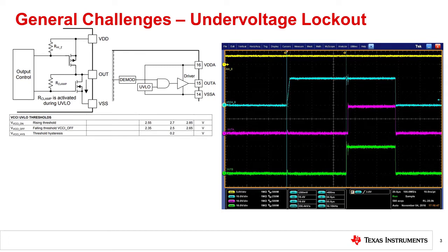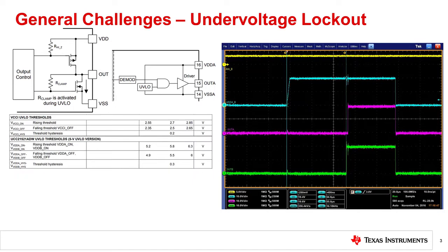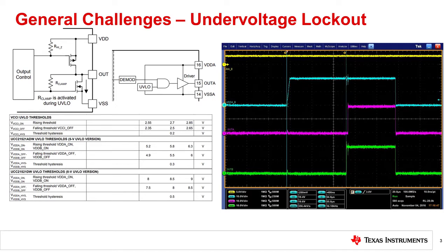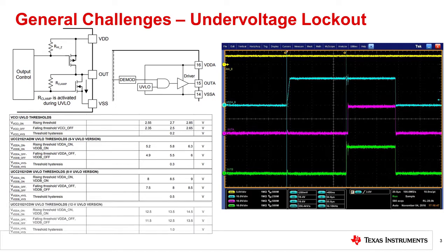Depending on the type of transistor being driven and the system power and voltage levels, choice of output driver UVLO is usually split between three categories: 5 volt for logic level MOSFETs and low voltage synchronous rectifiers, 8 volts for common power MOSFETs, and 12 volts for IGBTs and silicon carbide transistors, which require high drive voltages.